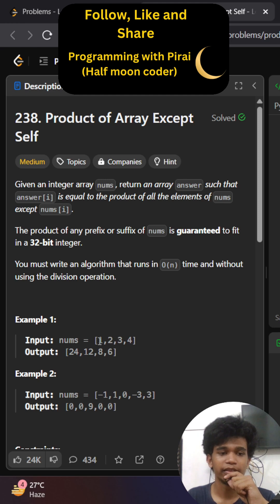For example, if this is the array, then we want to return the answer as for 1, it will be 2 into 3 into 4, which is equal to 24. For this 2, it will be 1 into 3 into 4, like that for this 3 and 4 also. It will be replaced in that answer array.